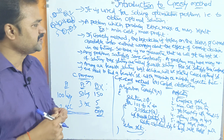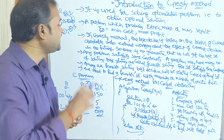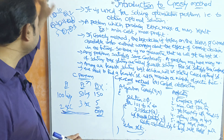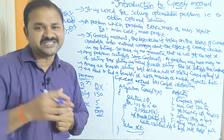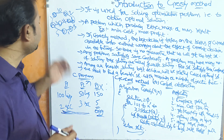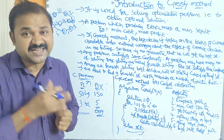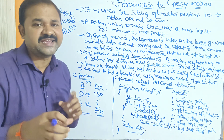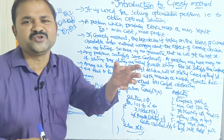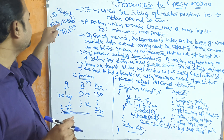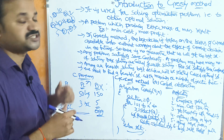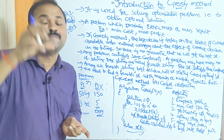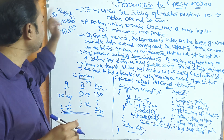In the greedy method, the best decision is taken based on current available information without worrying about the effect of the current decision in the future, so there is no guarantee we will get the best solution. For example, in a graph where A is the source and G is the destination, the costs from A to B, C, D are 1, 3, and 5. The least cost is 1, so we take that decision now without worrying about future paths. From B to D the cost is 10, from C to E it is 4, from D to F it is 1. At every stage we always take the best decision, though there is no guarantee this path gives the best overall solution.